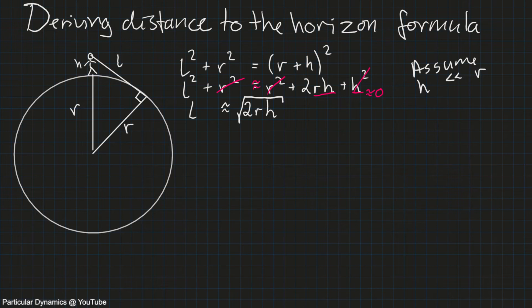Given a certain observer height, this works just fine in metric. If you use numbers in meters, for example, it will work out. If you want to use the common form of this equation where we have the distance to the horizon in miles and the height of the observer in feet, we need to add some conversion factors. And I'm going to do that.